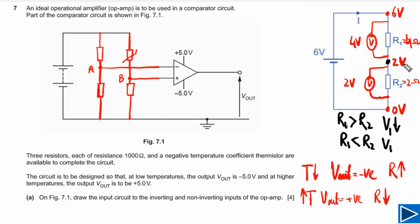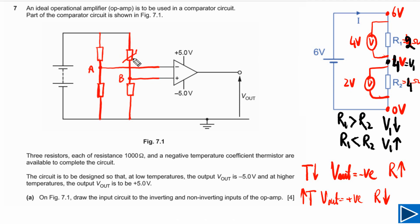When R1 is smaller than R2, the potential V1 at the midpoint will be higher. For example, if R1 is 2 ohms and R2 is 4 ohms, the potential at that point will be 4 volts. We will use this understanding to check whether the circuit is correct for the given conditions.